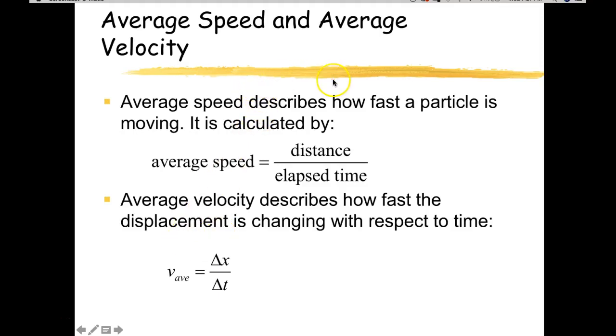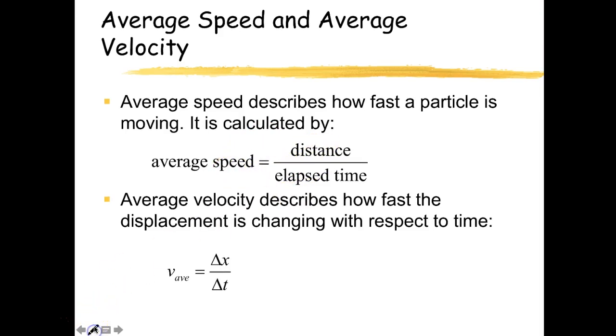Hey, this is Horner. We're going to first start looking at average speed and average velocity. Average speed is just distance over elapsed time, and you'll see that average velocity is different than that.